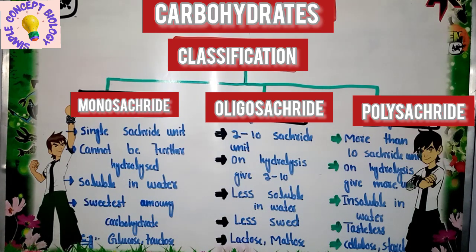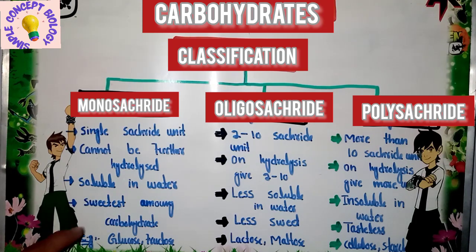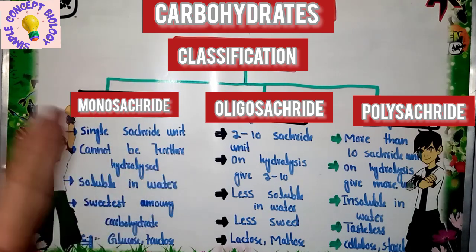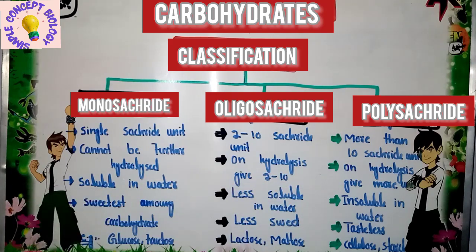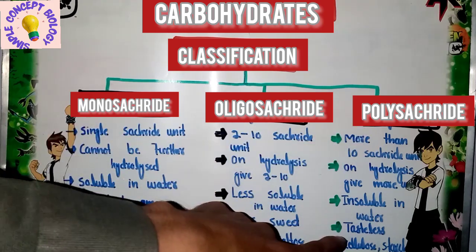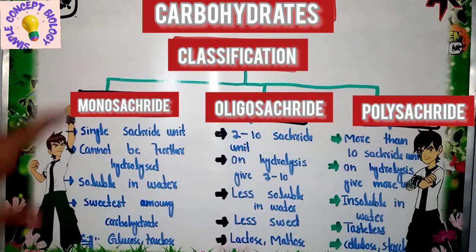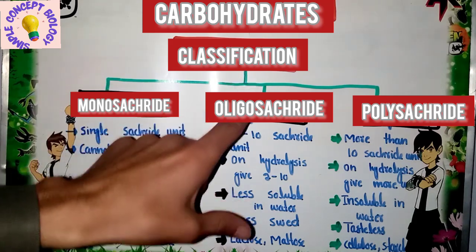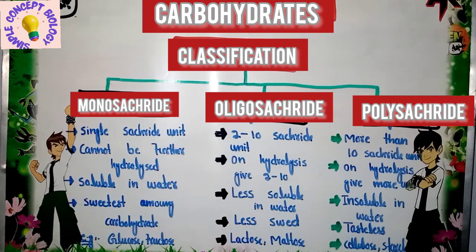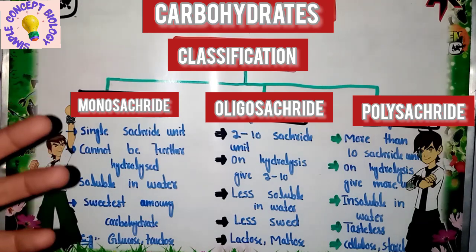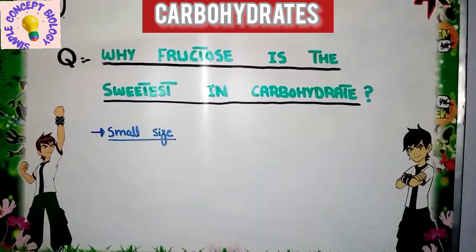Now, examples of each category: monosaccharides include glucose and fructose. Oligosaccharides include lactose. Polysaccharides include starch and glycogen. The term 'saccharide' means sweet, but it is not necessary that all carbohydrates are sweet.